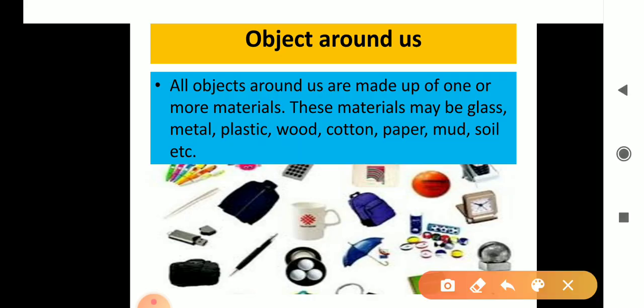The first topic is 'Objects Around Us.' All the objects around us are made up of one or more materials. These materials may be glass, metals, plastic, wood, cotton, paper, mud, soil, etc. In this picture you can see there are different types of materials.